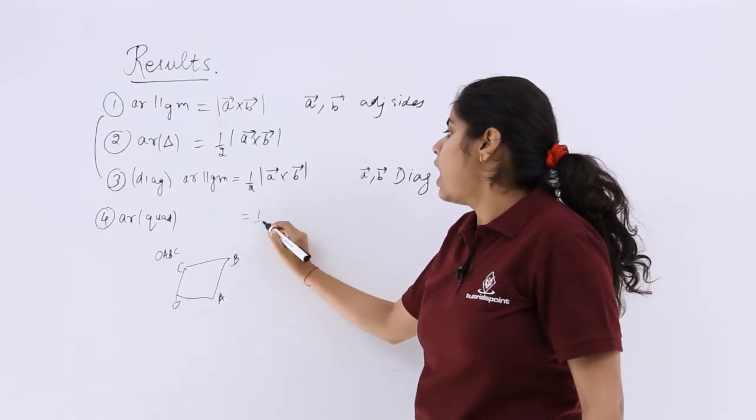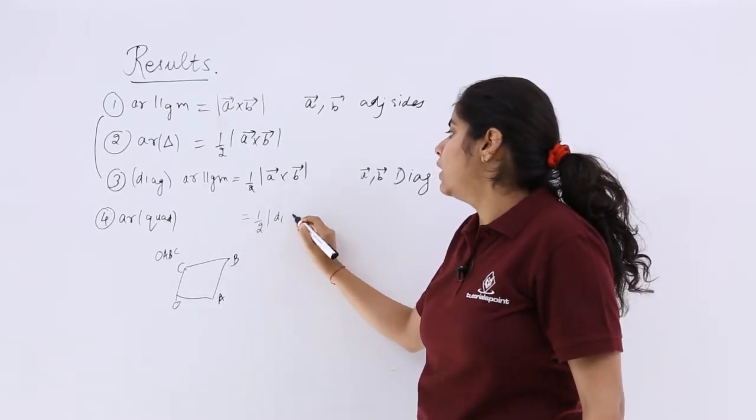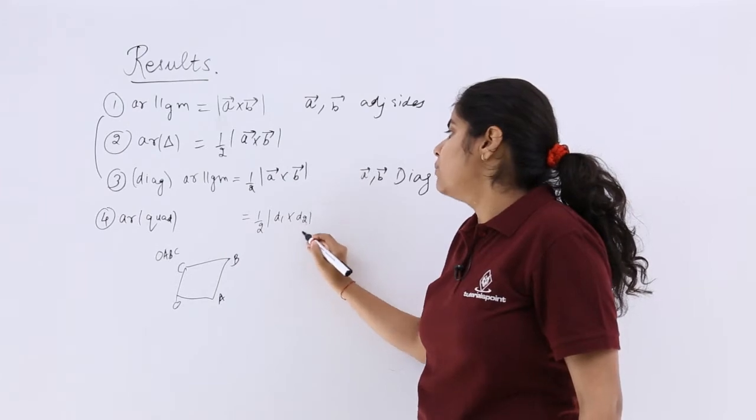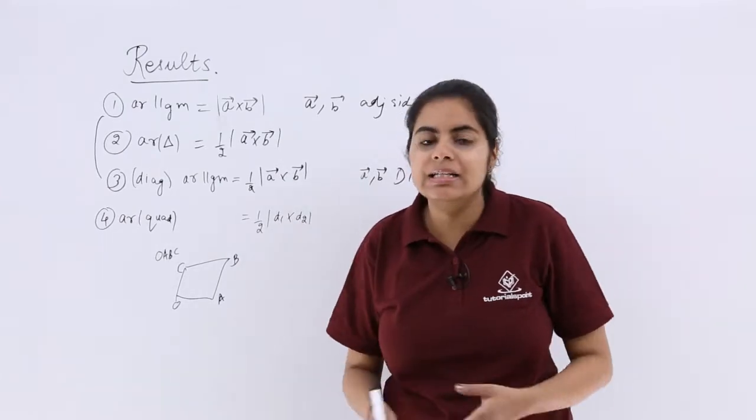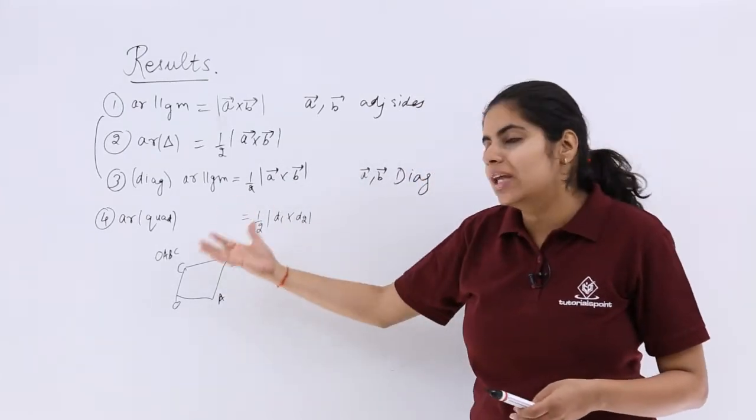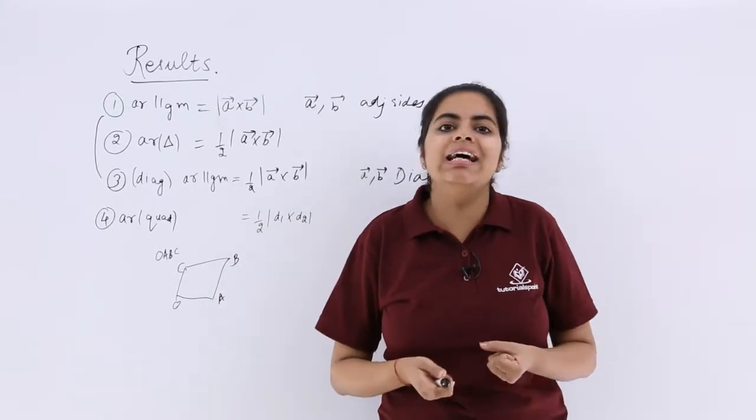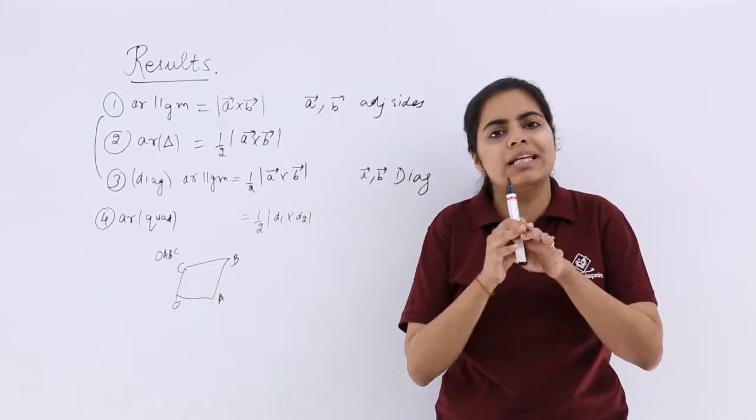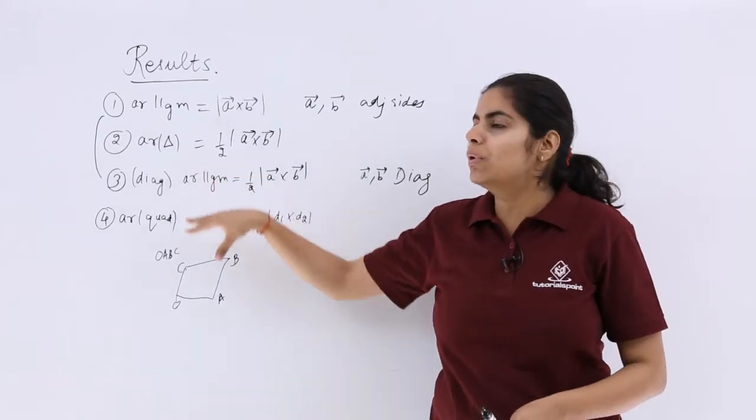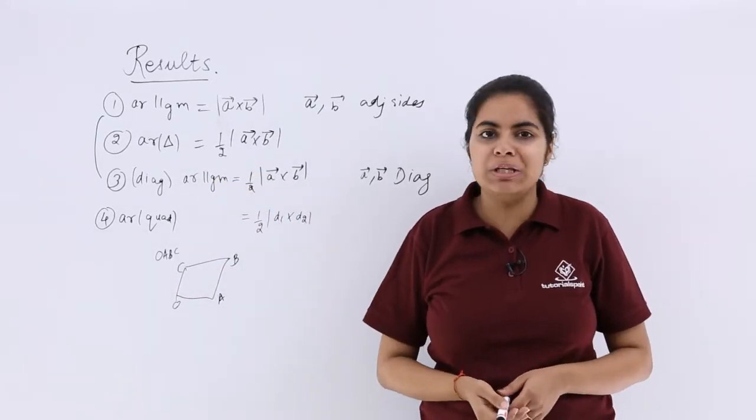So it is nothing but half D1 cross D2, where D1 and D2 are the diagonals. That is the formula in case of area of quadrilateral. So for area computation, vector product is actually very important. The formulas and the techniques you have to keep in your mind.